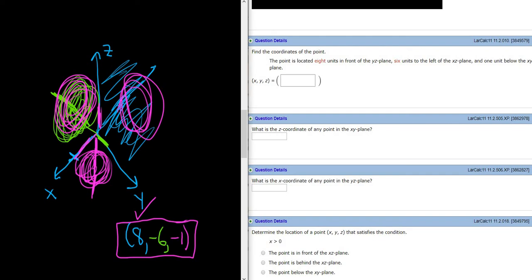One unit below the XY plane. So this is the XY plane. Below it is negative. So negative 1 for the Z coordinate. I hope this video has been helpful.